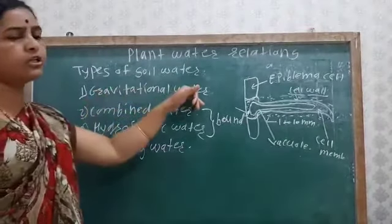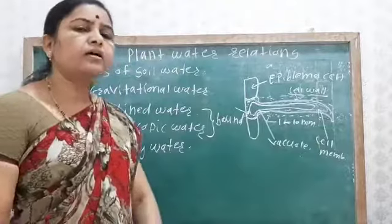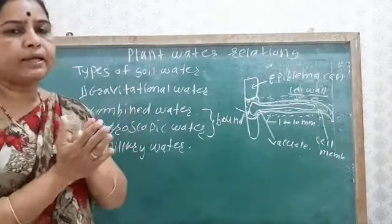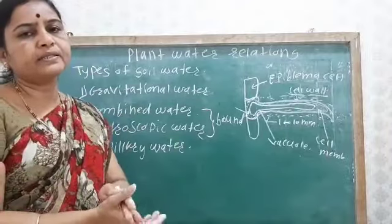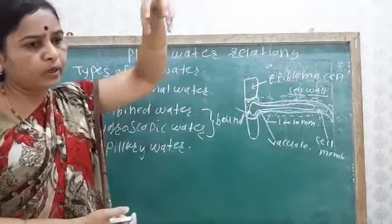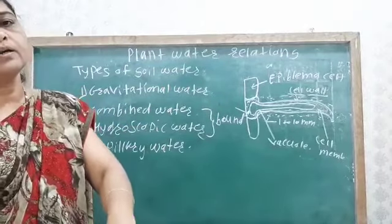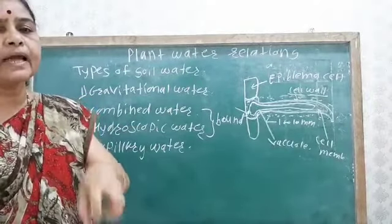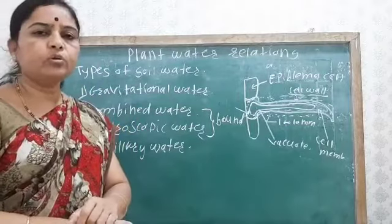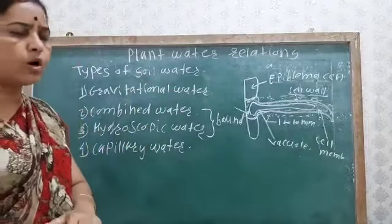The combined water and hygroscopic water are known as bound water, because their water molecules are tightly bound. Gravitational water percolates deep into the soil — when rainwater falls, it moves down through the fertile soil layer toward the rock layer, which is beyond the reach of root tips. Therefore, gravitational water is not absorbed by the root.